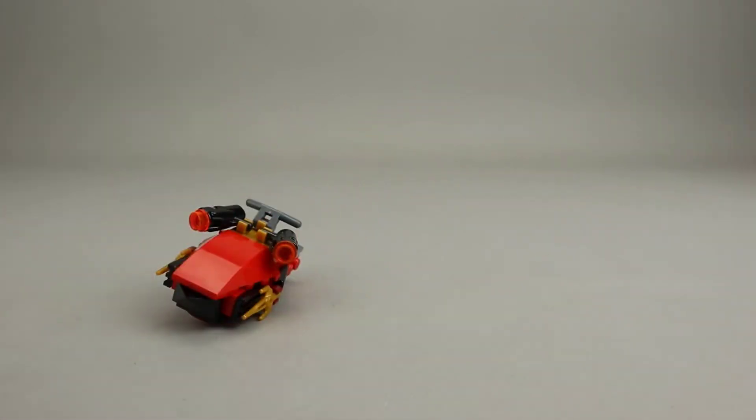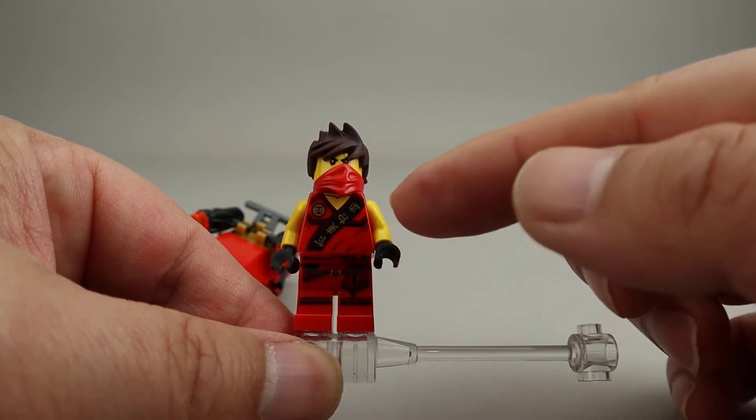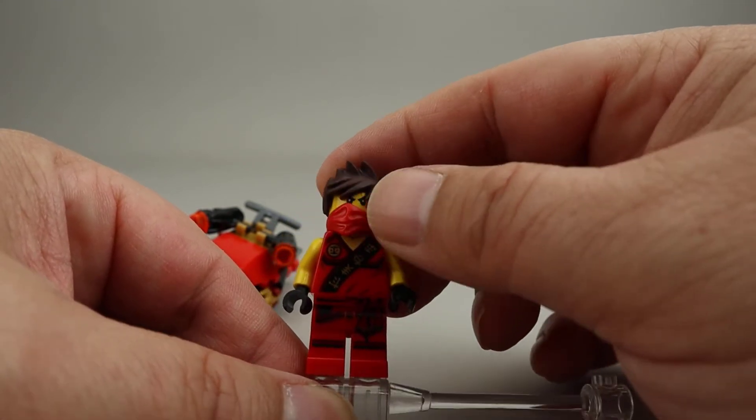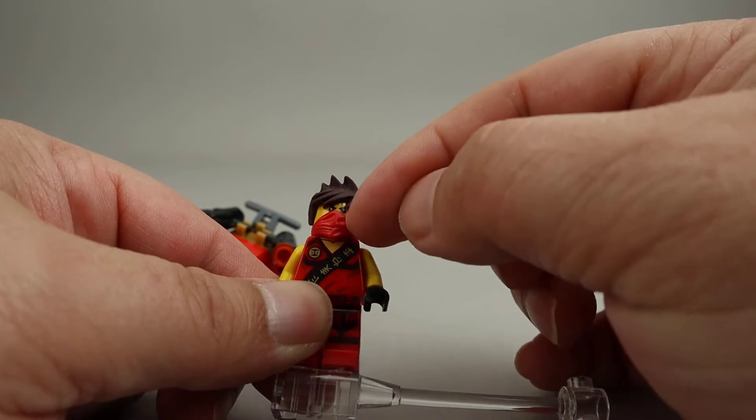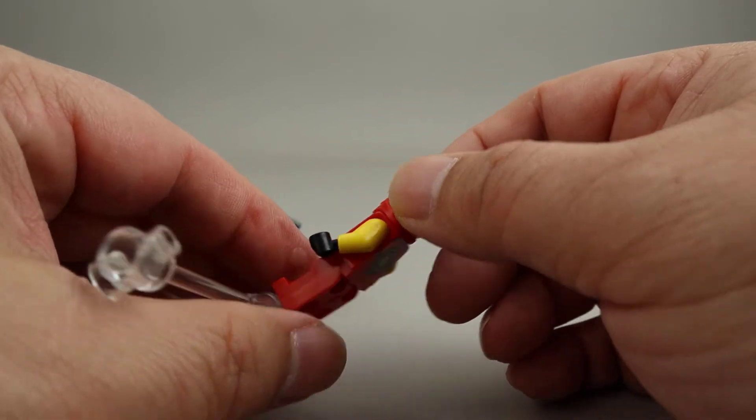Taking a look at Kai here, who has his printing here, his symbols, he's got his ninja cover here, the really messy hair as well.